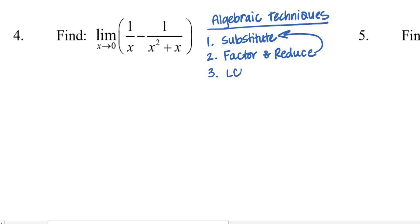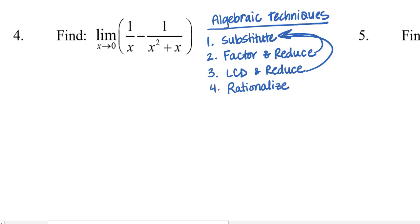Our third technique involves a common denominator — whether it's the lowest or not — and then we reduce or rewrite. It may not be the simplest-looking rational expression at that point, but it may be enough so we can then substitute. Lastly, the fourth technique is rationalize — and I'm not saying rationalize the numerator or denominator specifically, leaving it open to both — then you reduce or simplify so that you can substitute.